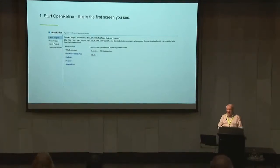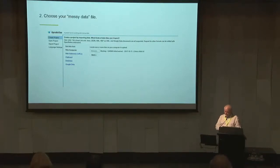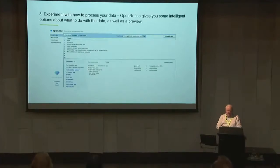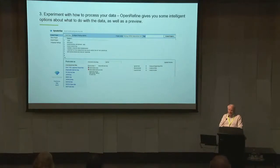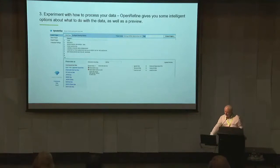OpenRefine runs locally so your data doesn't go anywhere outside your machine. You start the program up and it opens in your browser window. You can get data from spreadsheets or lots of different formats — you browse and find the file you want. It has a go at trying to identify what's in that source, and it can work with lots of different formats: not just spreadsheets but text files, JSON, and I think you can even scrape websites. It can open MARC as well.